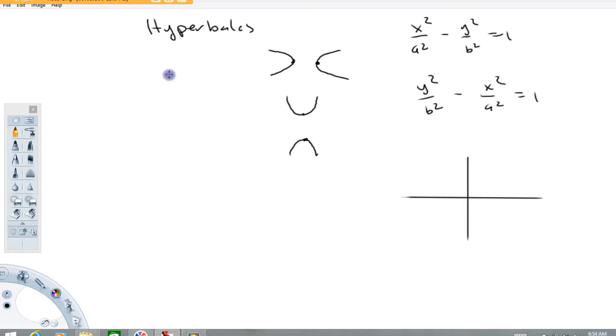So again, important things for hyperbolas. You have to decide is it a horizontal or a vertical opening hyperbola? That's one decision you have to make. Two, what are the coordinates of the vertices? And three, how do you get the asymptotes? And that's what I'm hoping to teach you in this video here. These three things and then how to sketch them. So let's get going.